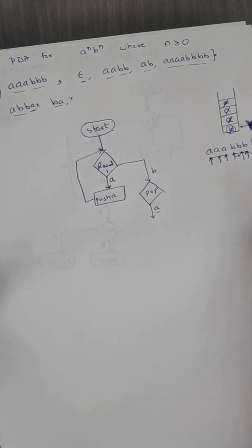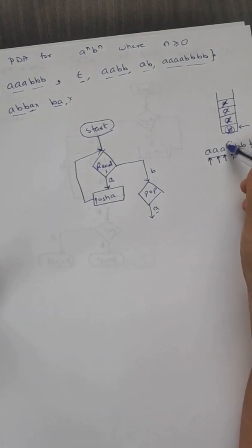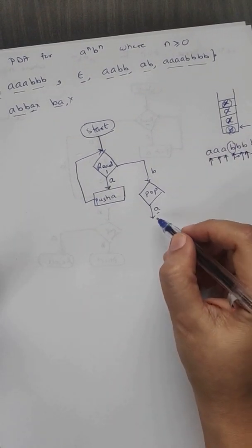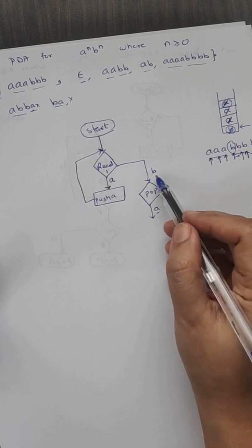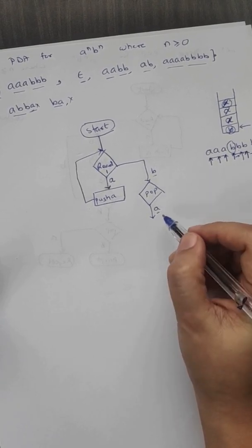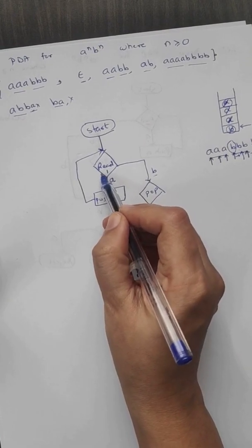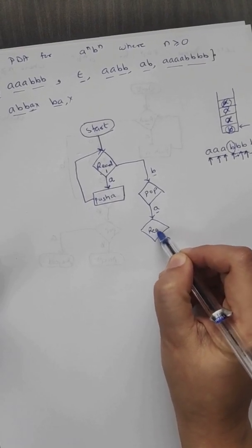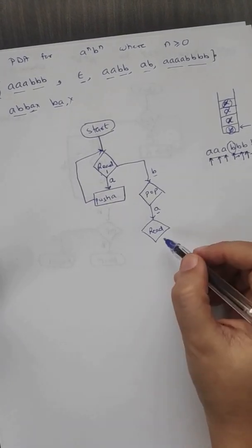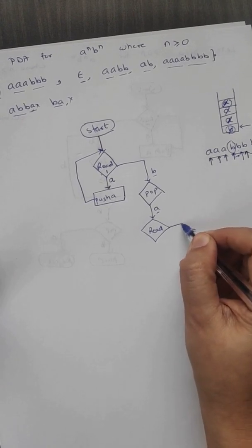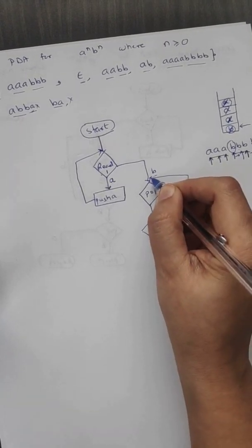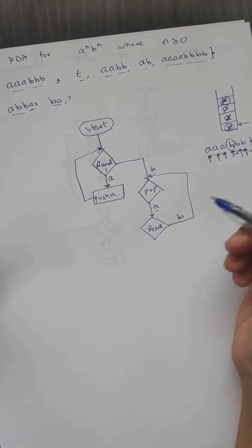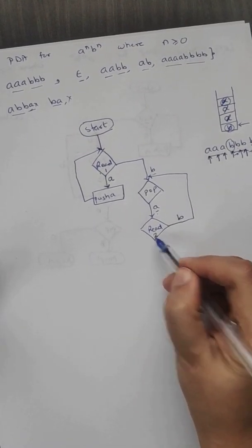For the b we received, we pop and expect an a to be there. Once we start receiving b's, we should not be allowed to receive a's anymore, so we create a new read state — read two. In read two, when we get a b again, we perform the same pop operation: pop a, and we call this pop two.